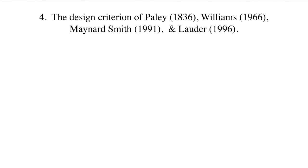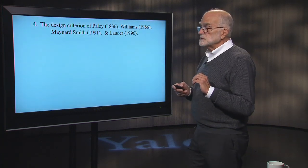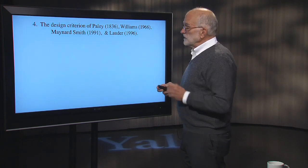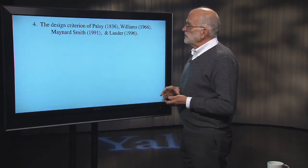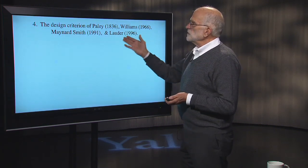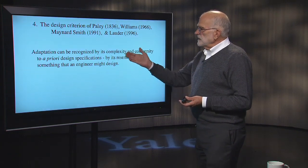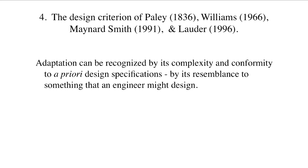The fourth criterion deals with the design concept. The ability of natural selection to produce the appearance of design is one of its deepest results. This was basically a debate started by William Paley, who didn't believe in natural selection but certainly saw a lot of design in nature, and then developed by George Williams, John Maynard Smith, and George Lauder. Adaptation under this criterion can be recognized by complexity and conformity to design specifications — it's not only complex, it's really precise, and in that sense it resembles something that an engineer might design. Any complex organ performing a difficult function efficiently meets this criterion; the vertebrate eye is a prime example.